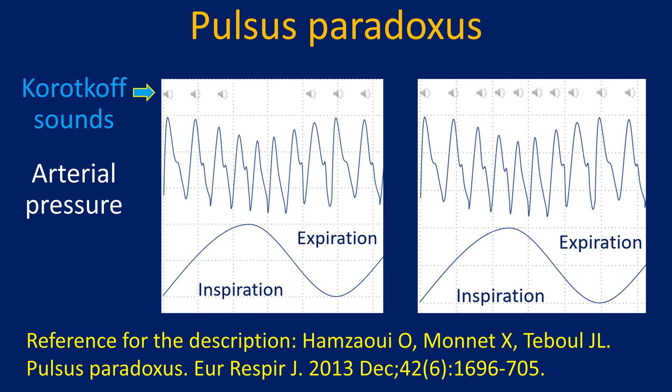Initially, the brachial cuff pressure is inflated above the presumed level of systolic pressure. The cuff is then slowly deflated, listening for the Korotkoff sounds. The level at which the first Korotkoff sound is heard in expiration is noted. As the cuff is deflated further, Korotkoff sounds are heard both in inspiration and expiration. The difference between these two levels is the paradox. The procedure is quite cumbersome and may take two to five minutes.